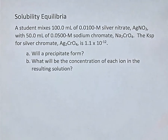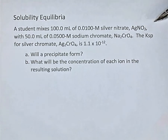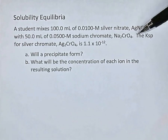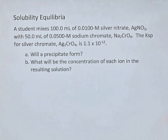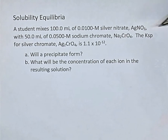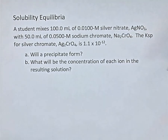The first part of the question asks: will a precipitate form? If you're mixing silver nitrate, which is soluble — it has nitrate in its formula — with sodium chromate, which is also highly soluble as an alkali metal salt, a double replacement reaction would occur. One product would be sodium nitrate, which is highly soluble, so it acts as a spectator ion. The other possible product is silver chromate, which by our solubility rules and its tiny KSP is only slightly soluble. So when we mix these, it's quite possible that silver chromate will precipitate.